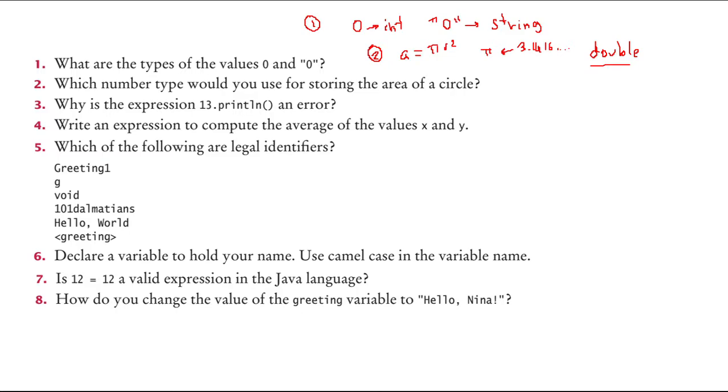Why is the expression 13.println() an error? Basically because 13 is just a number, and a number cannot be assigned to a method, because 13 is a number, not an object.